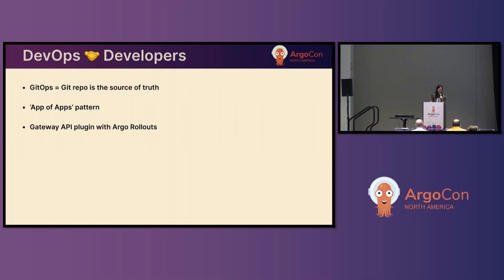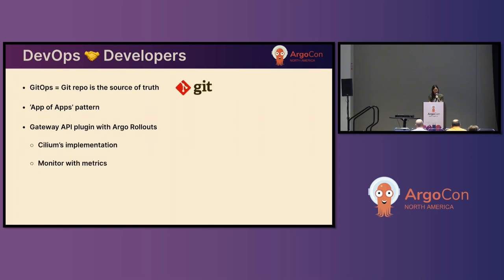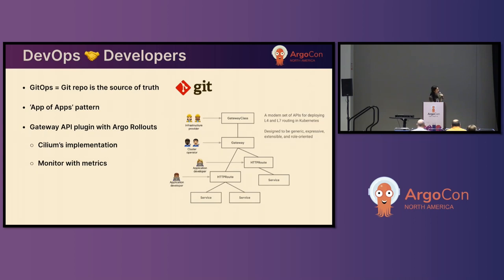Something I'm really passionate about is the Gateway API project, which is a SIG networking group under Kubernetes. It's the Ingress succession — as the Ingress is going to be deprecated, the Gateway API is something that is more flexible. Cilium has a very strong implementation, and with Cilium and eBPF you have metrics that you can monitor, so it pairs really nicely with Argo Rollouts. There's now a clear line between your cluster operators or platform ops and your application developers, who are empowered to create their own HTTP routes, gRPC routes, et cetera.